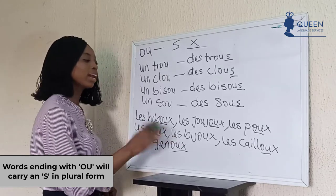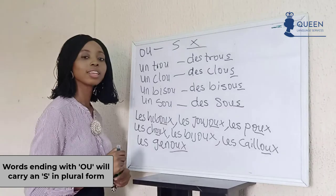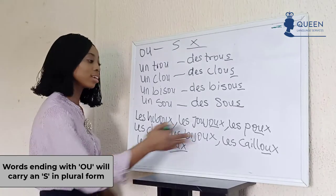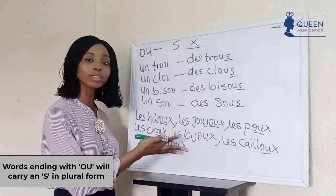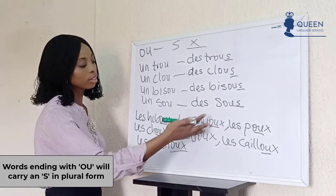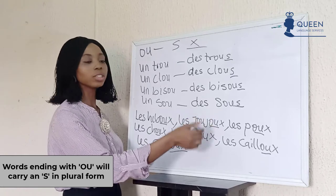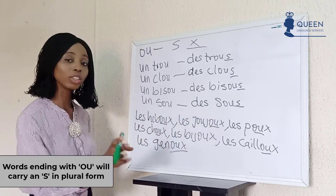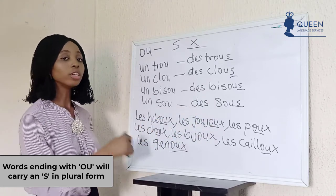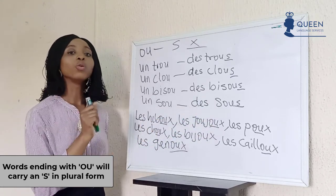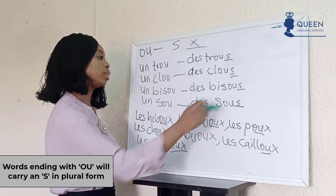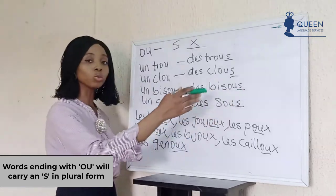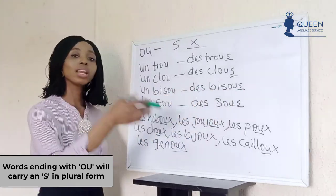Other than this set of words that have -x at the end, the remaining -ou words in plural form take -s. Let's look at another example of plural endings in French language.